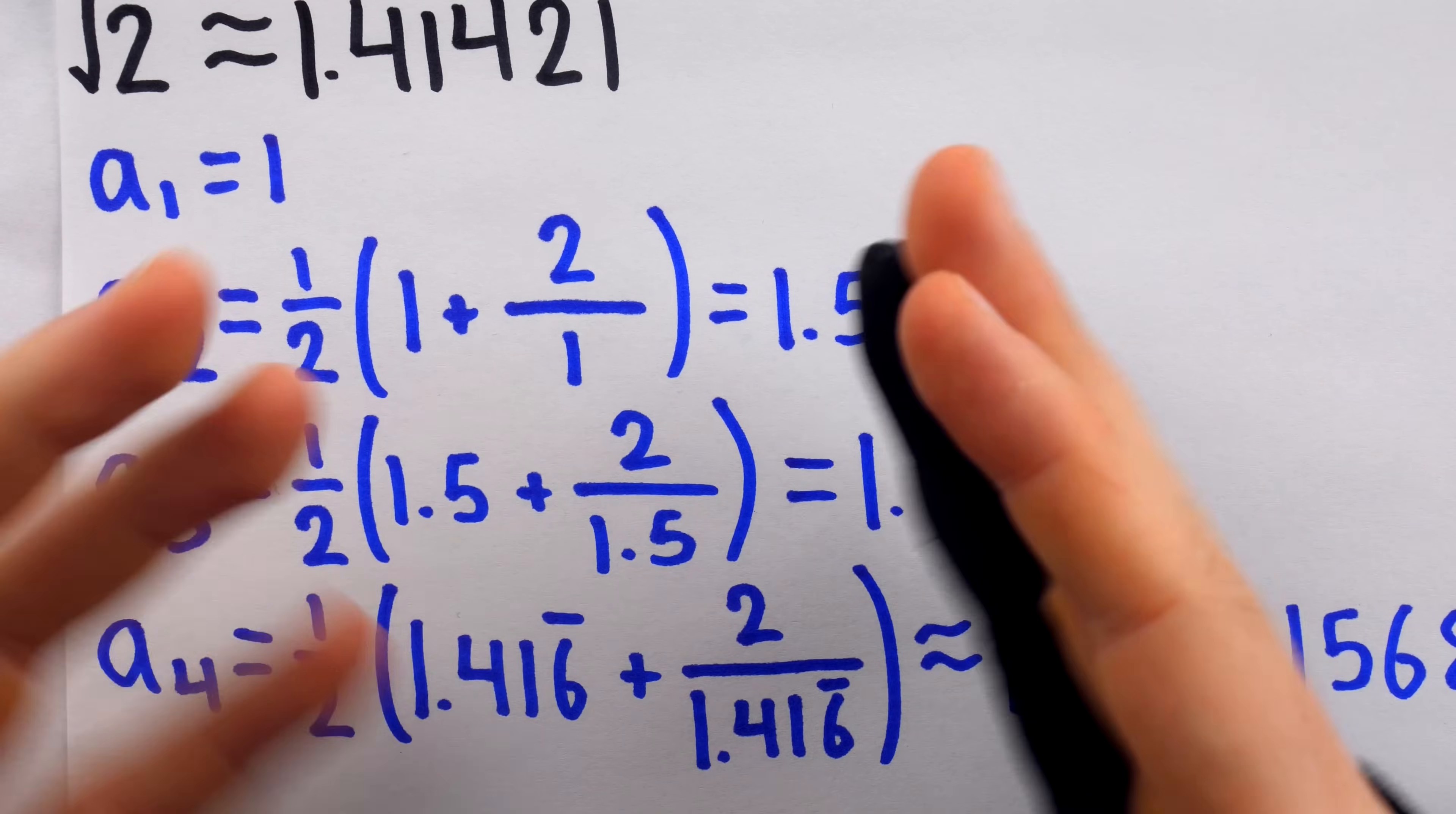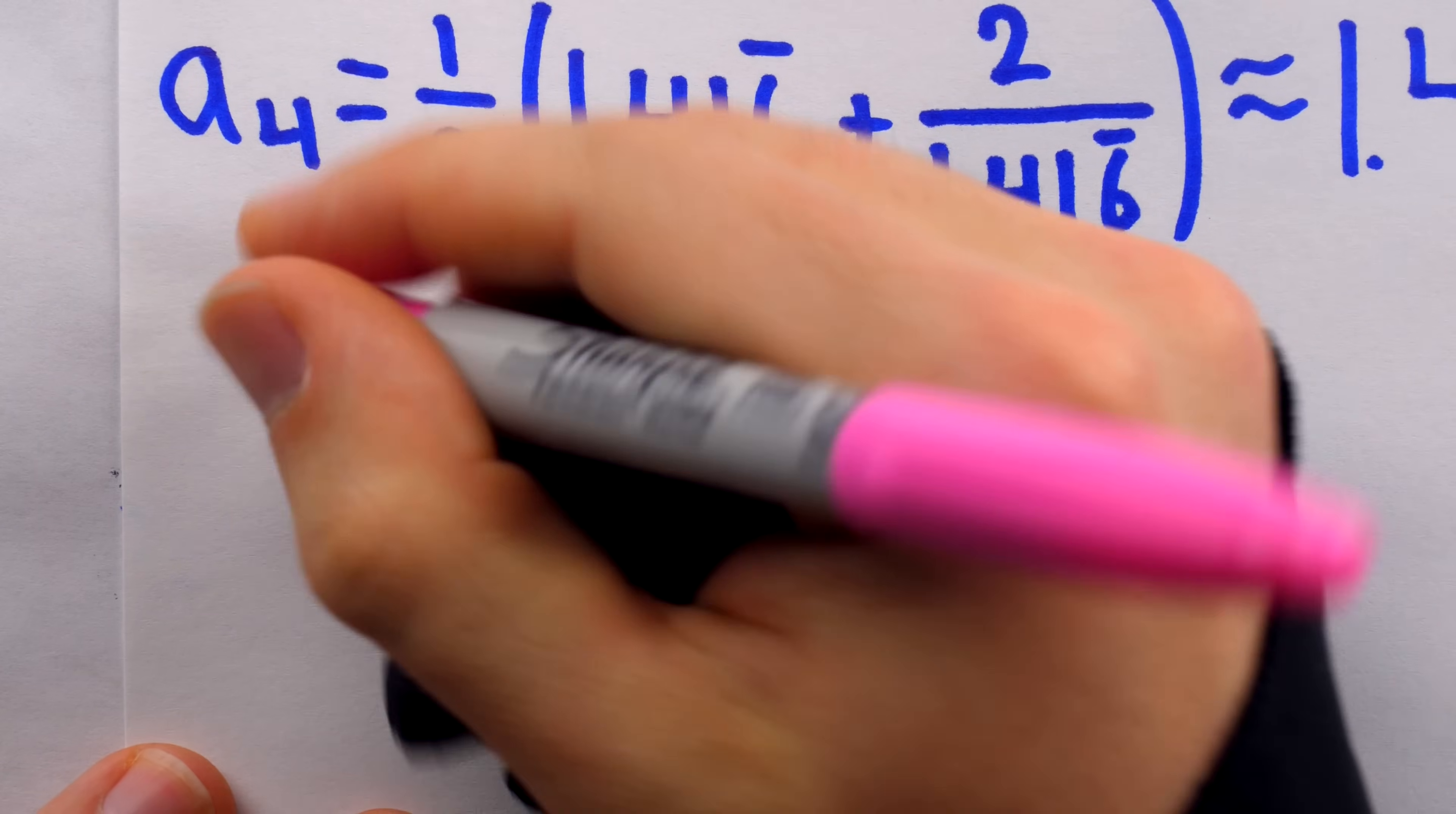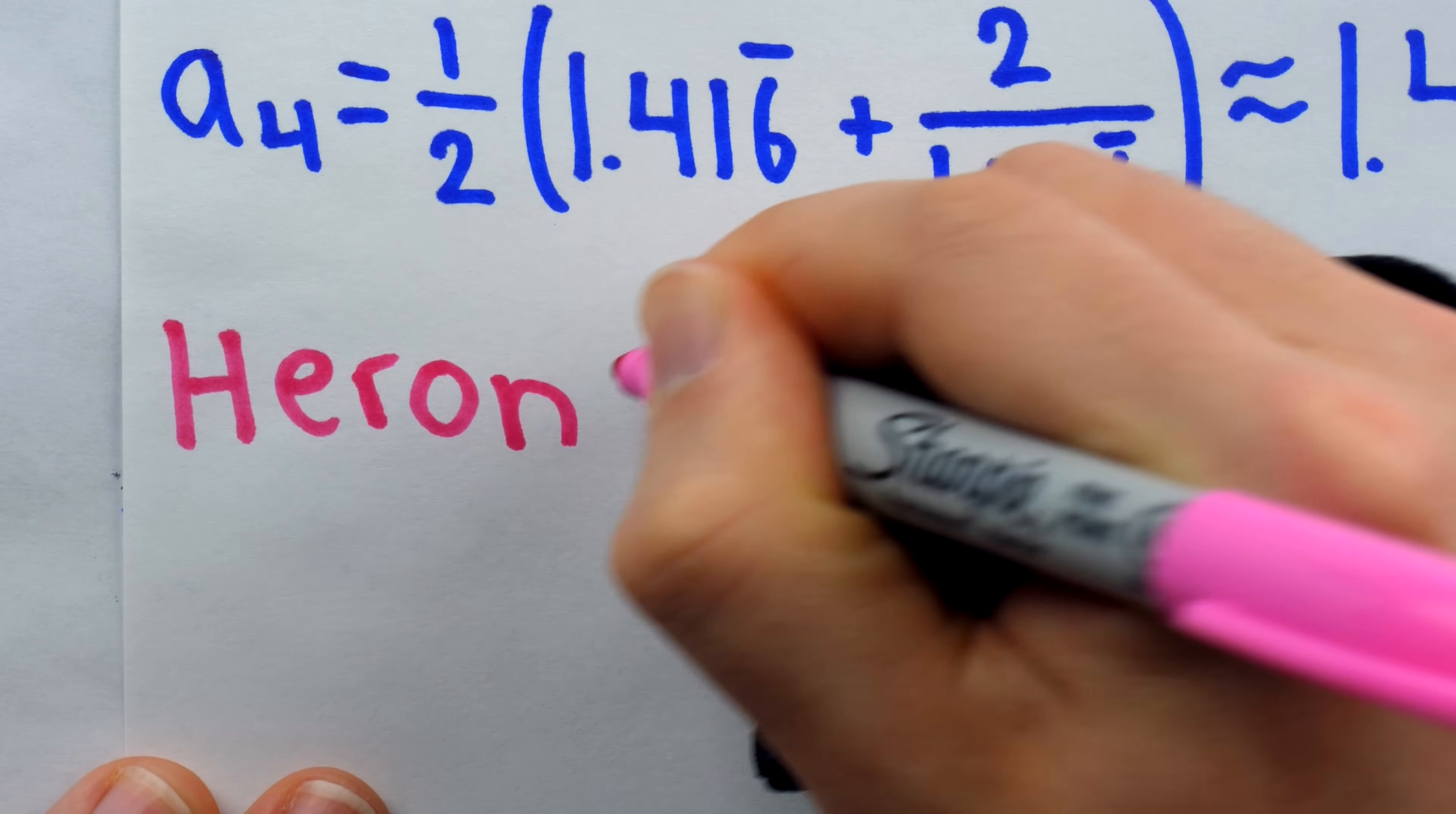Hold on a minute, and we will actually prove it. Indeed, the principle I just described is very straightforward, so it should be no surprise that Herron's method isn't just for the square root of 2, it works for any positive number.